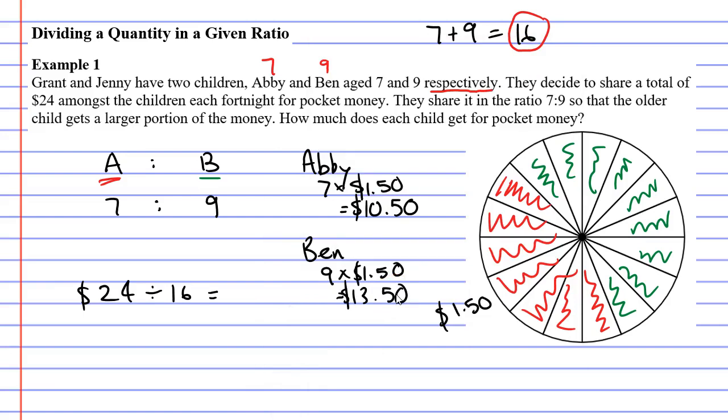Once you're done, there's a way to double-check that it's correct. The two amounts should add up to the total of $24. Let's check that.